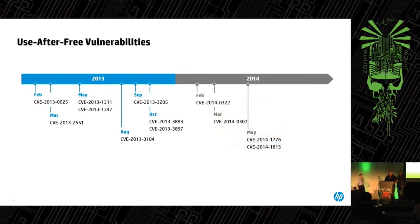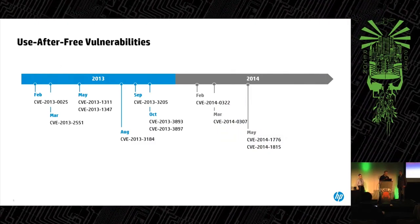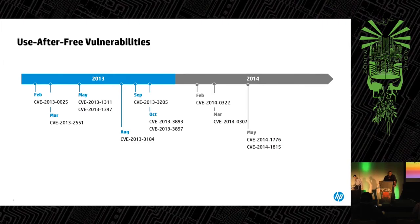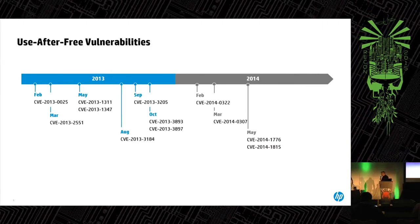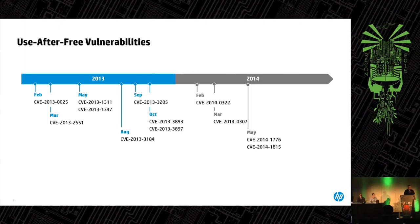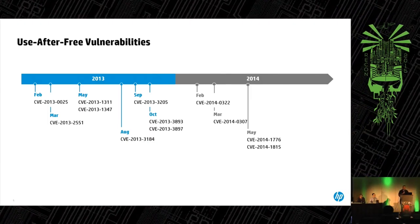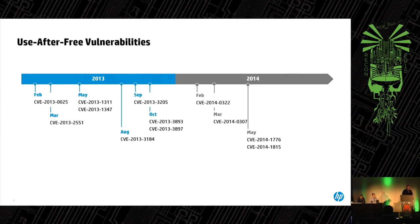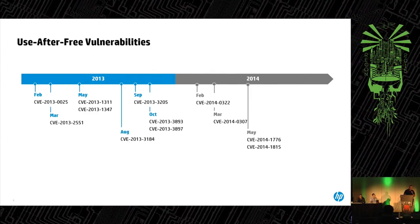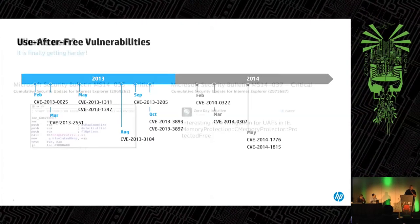It should be no surprise to anybody that use-after-free vulnerabilities were a very popular choice for attackers targeting government websites and visitors through watering hole attacks. What you see on the slide is a bunch of CVEs that were being used or known about publicly. Something had to be done — every single month a new attack was leveraging a use-after-free in Internet Explorer. As a result, attackers have shifted away from UAFs in IE and are now focusing on Flash vulnerabilities.